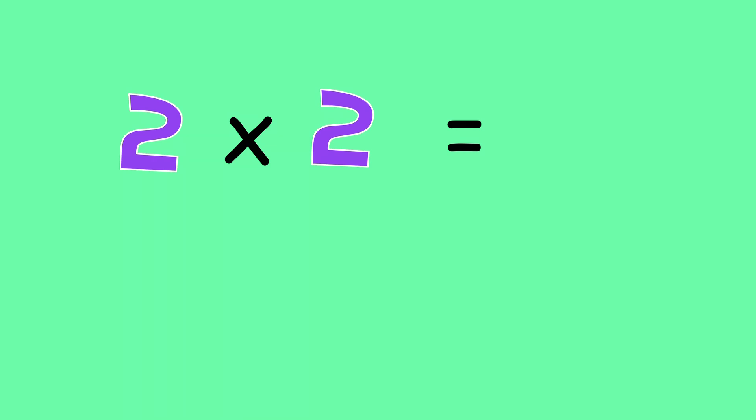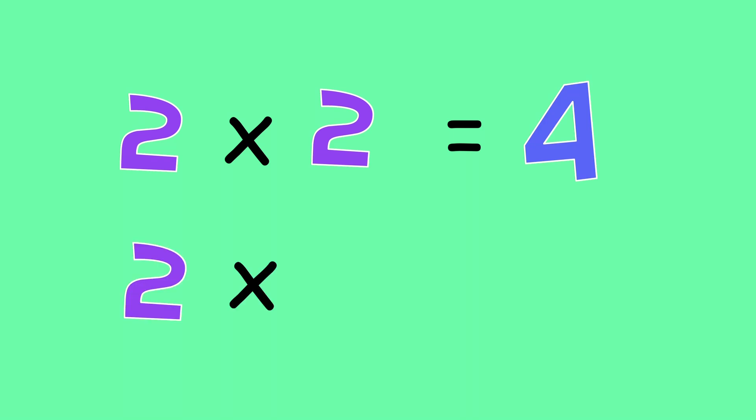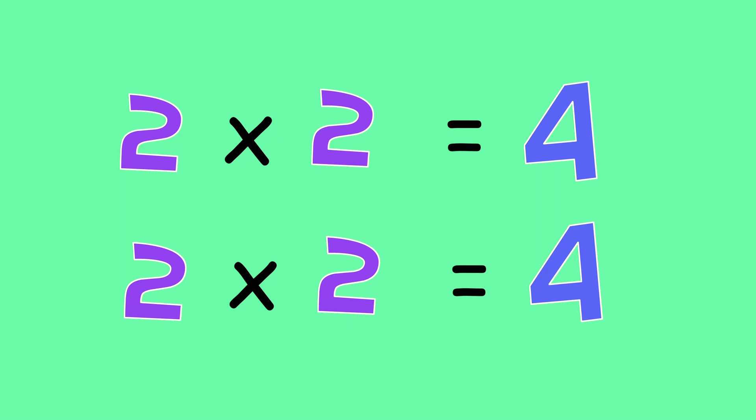What does 2 times 2 equal? Yes, 4. 2 times 2 equals 4.